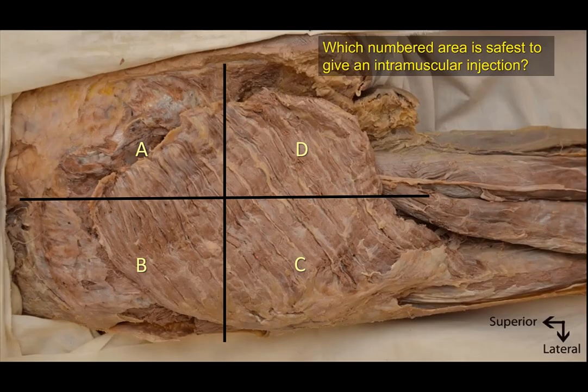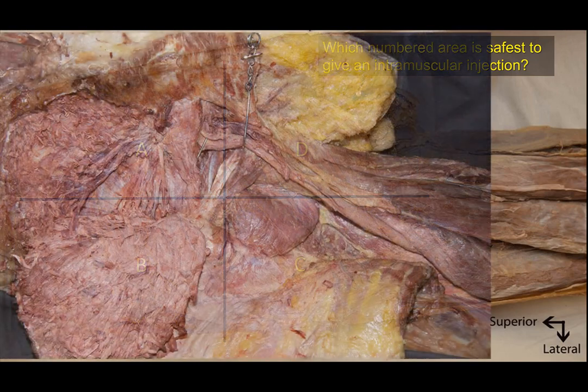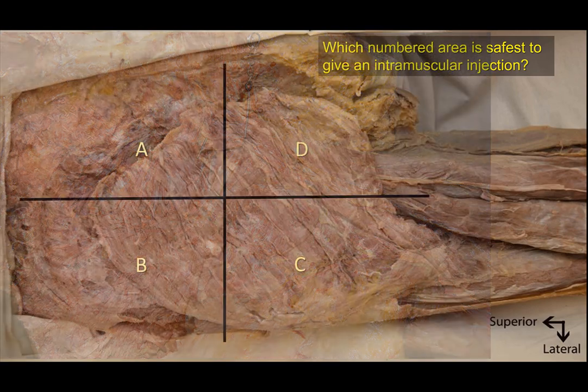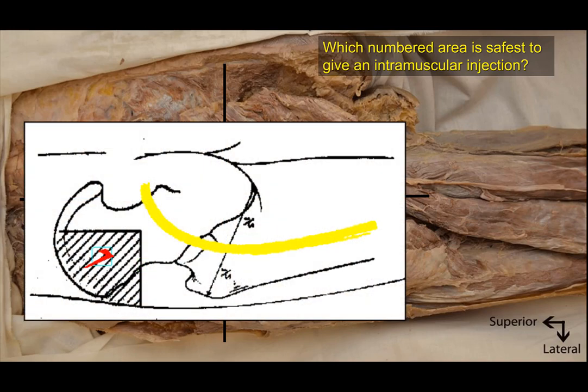Which numbered area is safest to give an intramuscular injection? The gluteal region is a common place to give an intramuscular injection because of the presence of thick muscles, but at the same time there is a neurovascular bundle located here. There's a big nerve — the biggest nerve in the body — which is the sciatic nerve, as well as the superior and inferior gluteal nerves, the posterior cutaneous nerve of the thigh, nerve to quadratus femoris, the pudendal nerve, and others. In addition, there are the superior and inferior gluteal arteries here. You don't want to inject into these vessels or into the sciatic nerve, so you have to choose a safe area.